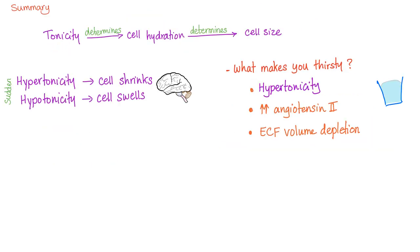Let's wrap it up. Tonicity determines cell hydration, which determines cell size through osmosis. Hypertonicity causes the cell to shrink; hypotonicity causes the cell to swell. What makes you thirsty? The main stimulant is hypertonicity, increased angiotensin 2, and extracellular fluid volume depletion — especially if severe.